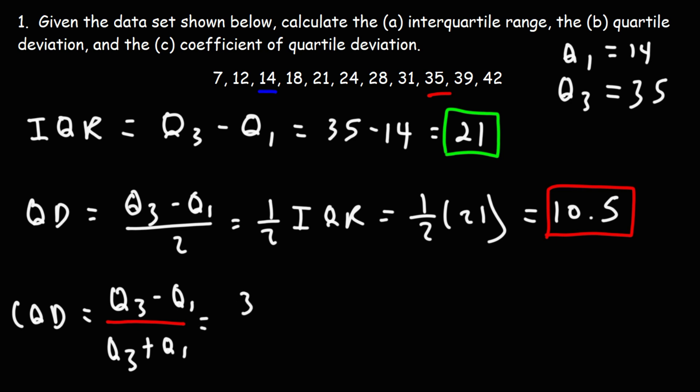So it's going to be 35 minus 14, divided by 35 plus 14. So this is 21. 35 plus 14, that's going to be 49.